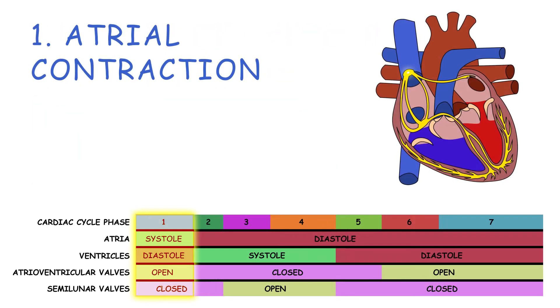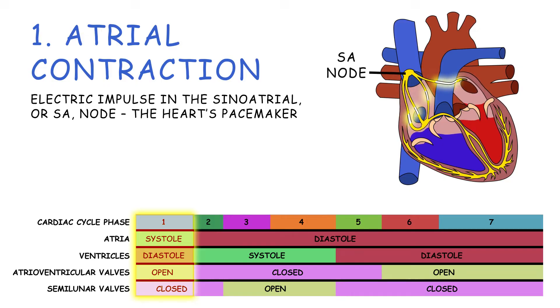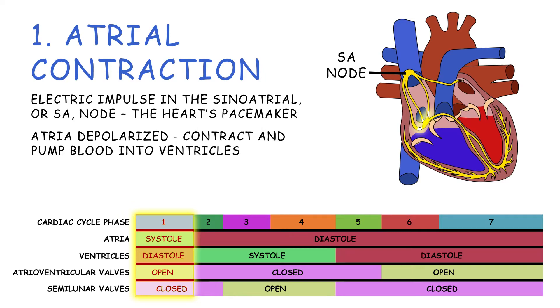First, we have atrial contraction. This starts with an electrical impulse in the sinoatrial, or SA, node, the heart's pacemaker. The electrical signal depolarizes the atria, causing them to contract and pump blood into the ventricles.